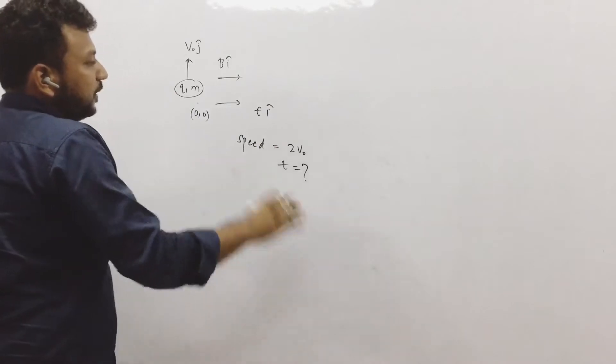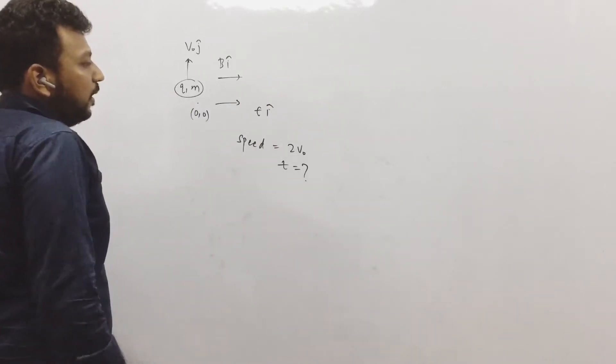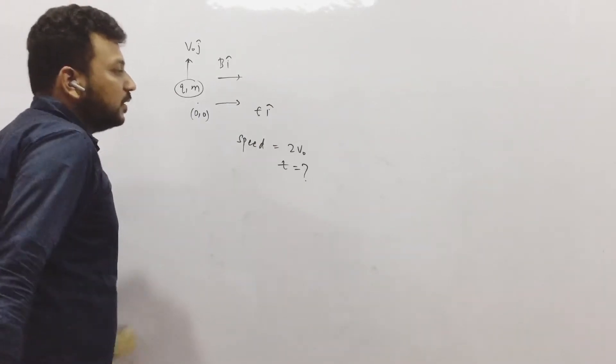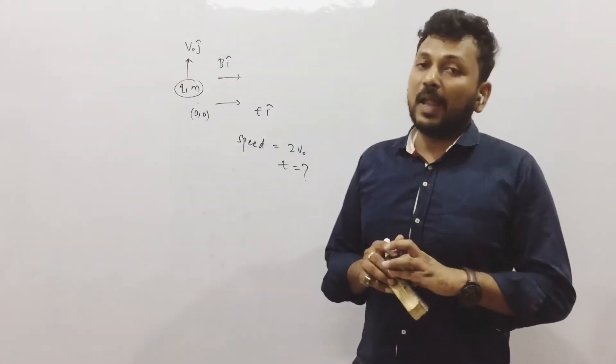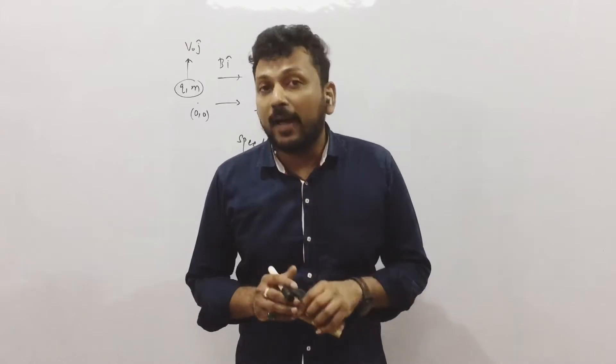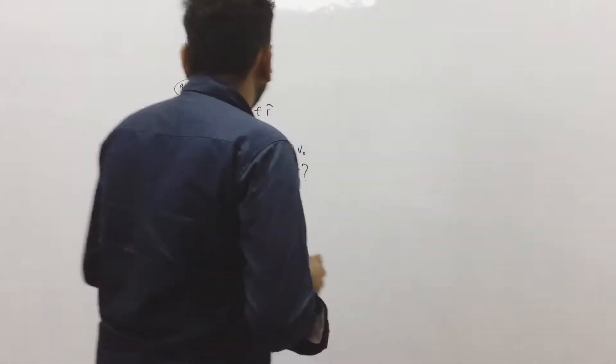This is the electric field. We need to tell the time at which speed is equal to 2v0. So first of all understand that whenever time is asked, we need to solve kinematics.